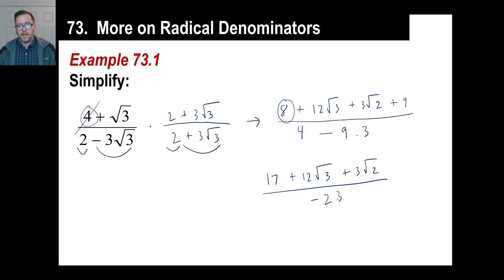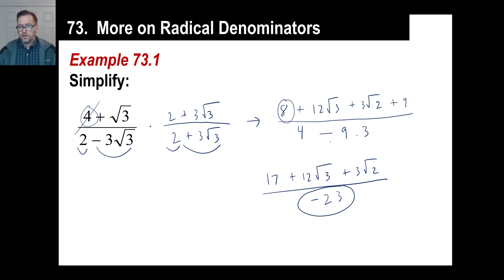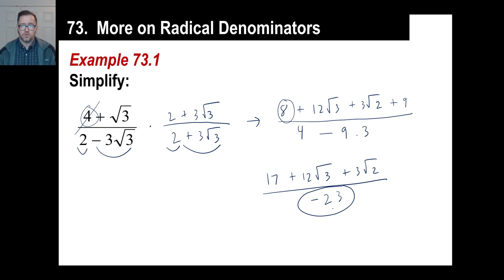The whole point of this is to rationalize the denominator — that is, to turn this denominator into a rational number, which means it can be expressed as a fraction. Square roots like these that don't have an integer as an answer are not rational numbers; you can't express them as a fraction. This denominator is negative 23, which is of course negative 23 over one if you want to write it that way.